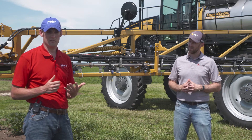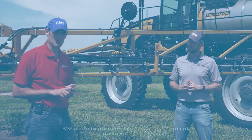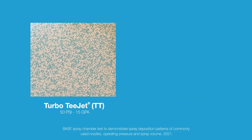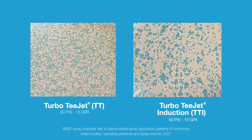We compared the TT nozzle, which is what we would recommend for a Liberty herbicide application, to a TTI nozzle, which produces those larger ultra-coarse droplets for auxinic herbicides like dicamba. What we observed were smaller droplets and more uniform coverage out of the TT nozzles, versus the TTI nozzles which produced larger droplets and gave a little bit less coverage.